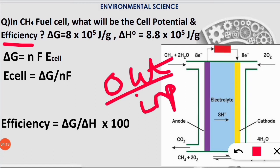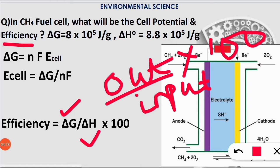Efficiency equals output divided by input multiplied by 100 to get the percentage. Here the output will be ΔG because ΔG gives free energy, which is the output. The input will be ΔH, which is the total heat energy.